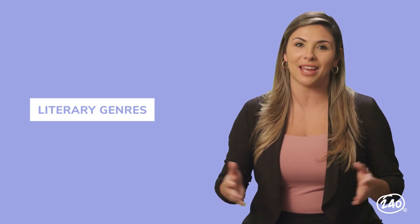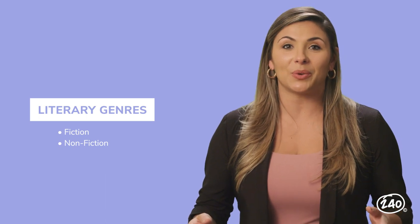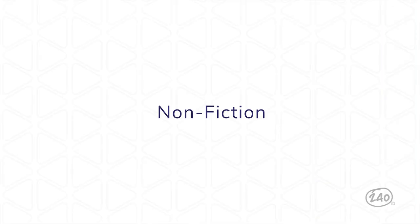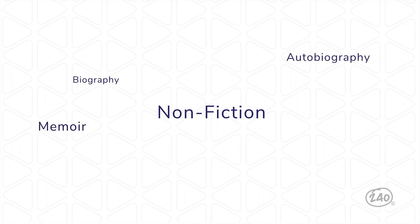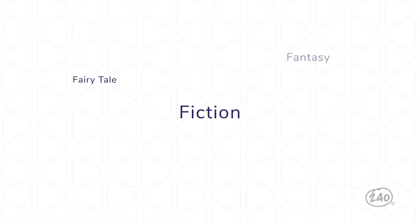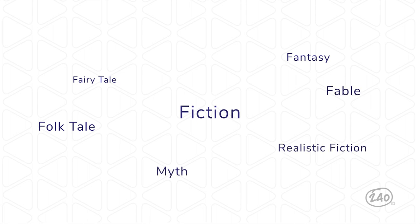Text can be divided into two big categories: fiction and nonfiction, each made up of genres. Common nonfiction genres include biography, autobiography, and memoir — all about the lives of real people. You should also be familiar with expository, procedural, and persuasive text — all informational, fact-based texts that often include features like headings, captions, and glossaries. Common fiction genres include fairy tale, fantasy, folk tale, fable, myth, and realistic fiction — all classified as narrative texts because they tell a story. You'll also need to know poetry and drama.